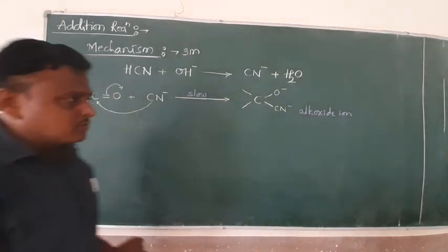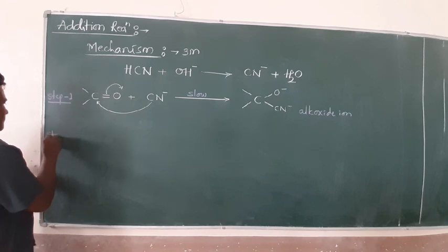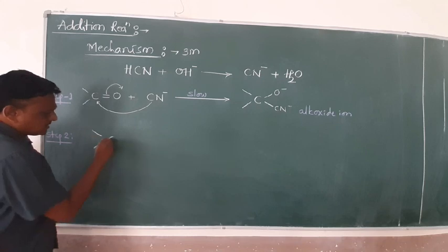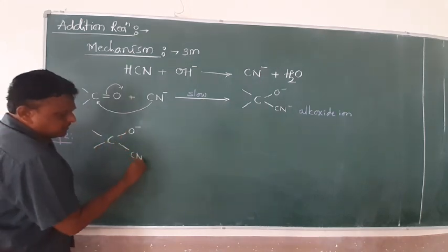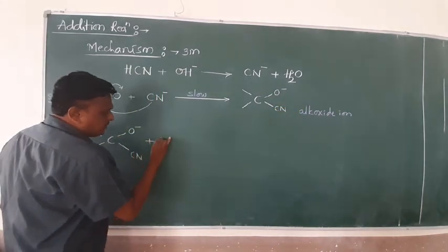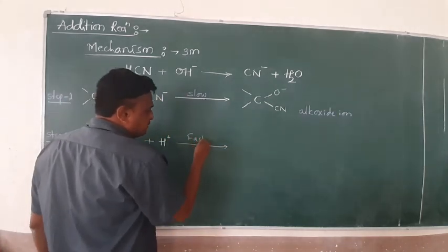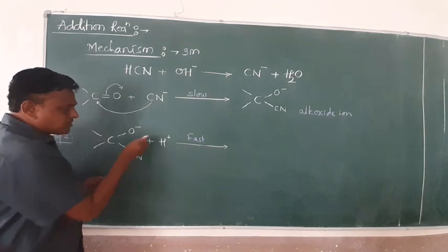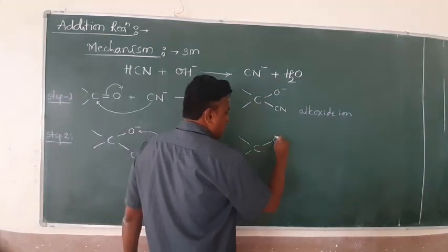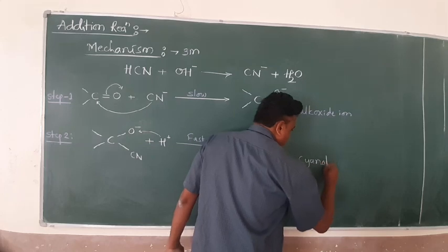This is very important — the formation of the unstable alkoxide anion. In Step 2, H⁺ attacks the alkoxide anion — this is the fastest step. The CN⁻ attacks the protons (H⁺), very fast. Now the formation of the product is a carbon bearing OH and CN groups. The name of this compound is cyanohydrin.